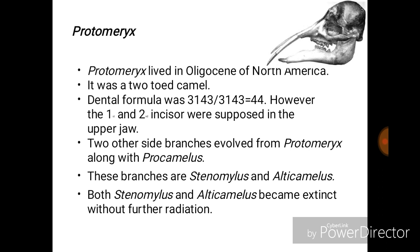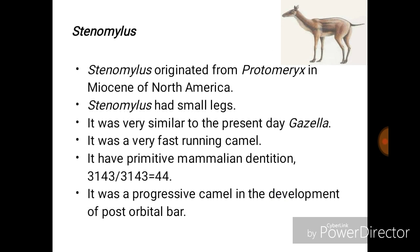Two side branches evolved from Protomeryx along with Procamelus: Stenomylus and Alticamelus. Both became extinct without further radiation. Stenomylus originated from Protomeryx in the Miocene of North America. It had small legs, was very similar to the present-day gazelle, and was a very fast-running camel. It had primitive mammalian dentition — 3 incisors, 1 canine, 4 premolars, and 3 molars — and was progressive in the development of the post-orbital bar.